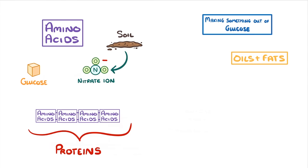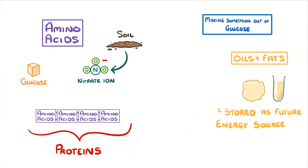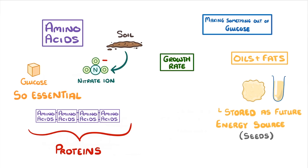The final use is making oils and fats, which can also be stored as a future energy resource, particularly for seeds. Because glucose is so essential for plants, their growth rate is often dependent on how fast they can photosynthesize.